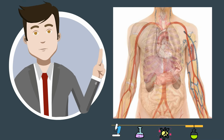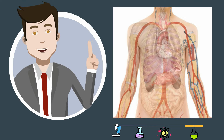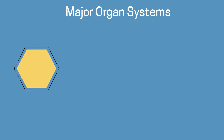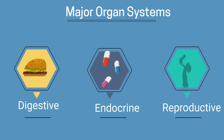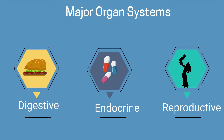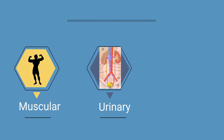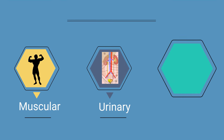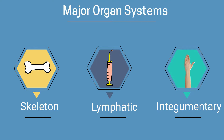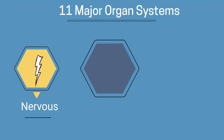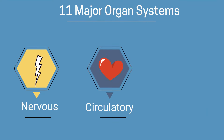The 11 organ systems that we will memorize are digestive, endocrine, reproductive, muscular, urinary, respiratory, skeletal, lymphatic, integumentary, nervous, and circulatory. These are the major systems.